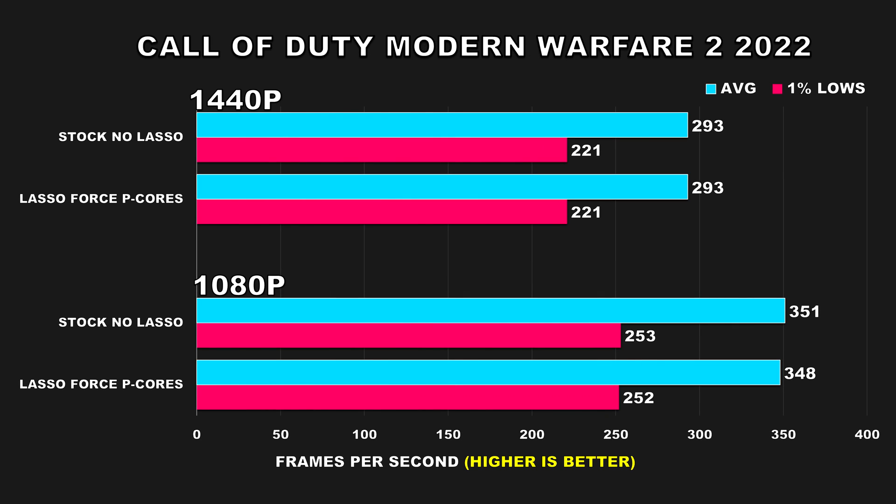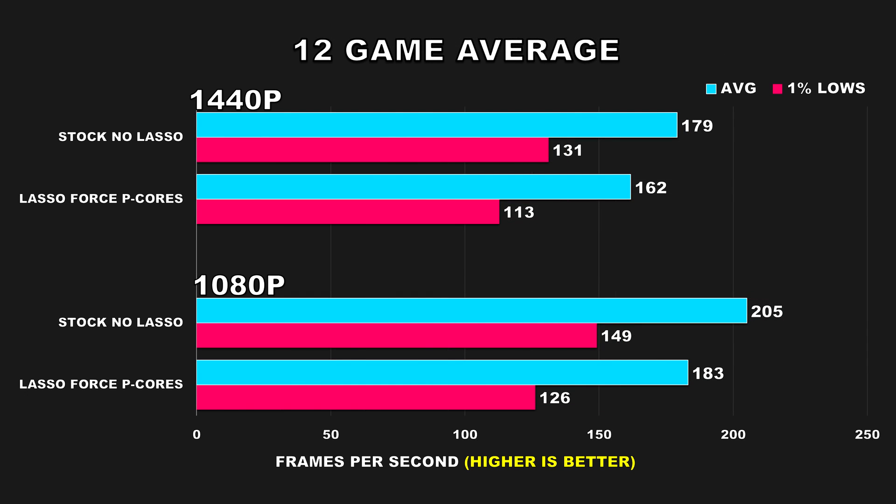The last game we're looking at is Call of Duty: Modern Warfare 2 (2022). While our performance doesn't improve, at least we didn't see any drastic drops either. For our 12-game average, the results practically speak for themselves. At 1080p without Lasso, we were getting 12% higher FPS on average frame rate and 18% on 1% lows. At 1440p, we see 11% and 16% differences respectively. After reviewing all these results, I personally can't find any compelling reasons to use this program — it doesn't seem to boost performance, and in several games we observed a performance drop, with a couple of titles essentially unplayable. For games where we didn't see a drop, results were virtually identical to running without Process Lasso.